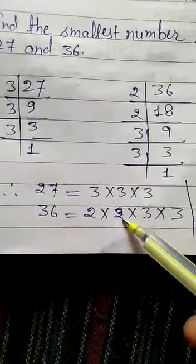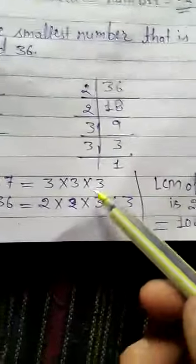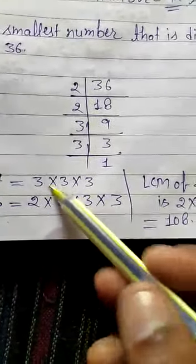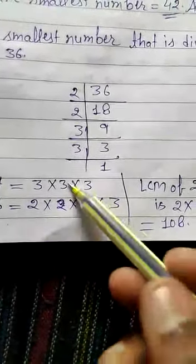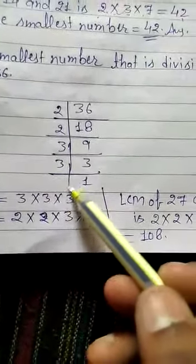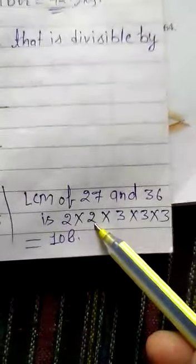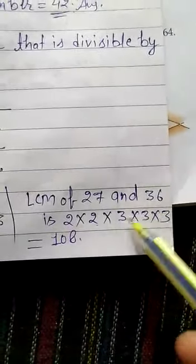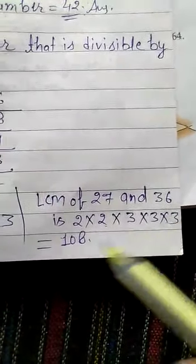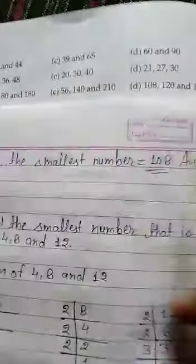For LCM of 27 and 36: 2 appears twice so we write 2 × 2; 3 has one pair in common so we write one pair of 3s — 3 × 3; then there is a single 3 remaining so we include that too. Multiply: 2 × 2 = 4, 4 × 3 = 12, 12 × 3 = 36, 36 × 3 = 108. So the smallest number equals 108. This is the answer.